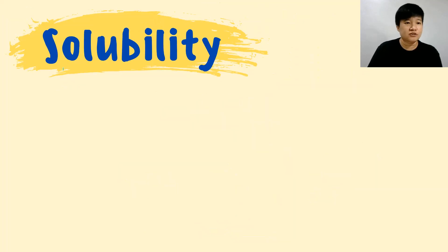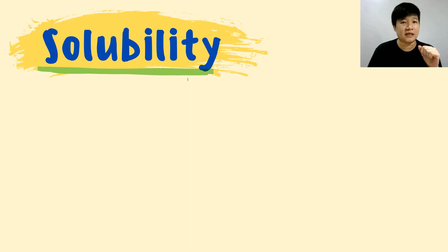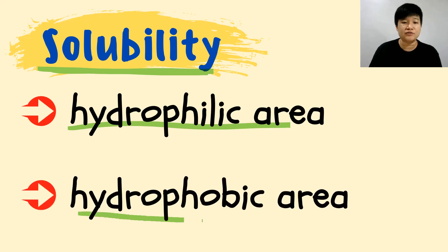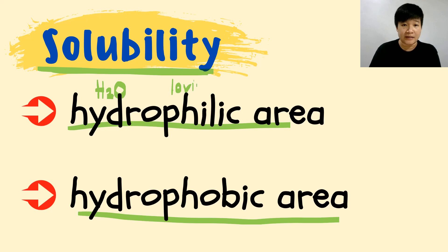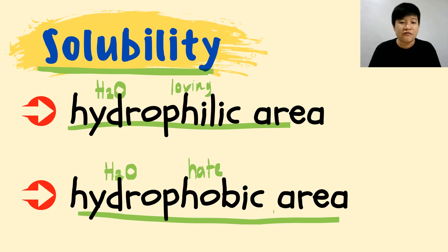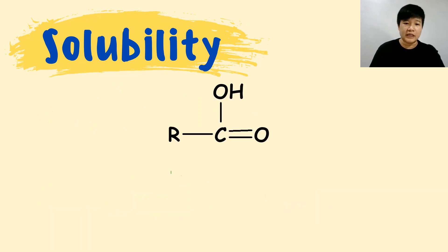When talking about solubility, the two main keywords you should have in mind are hydrophilic area and hydrophobic area. 'Hydro' represents water, 'philic' means loving — so the hydrophilic area is the area that loves water. 'Phobic' means you hate water, so the hydrophobic area is the area that stays very far from water.